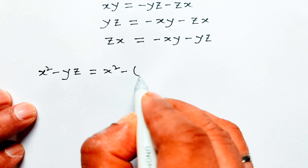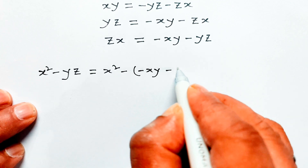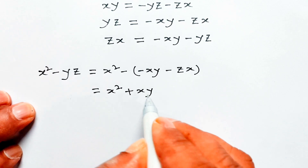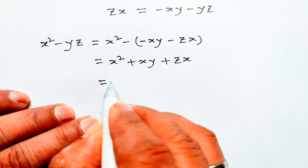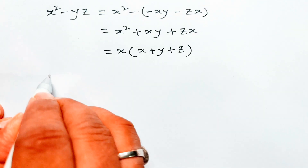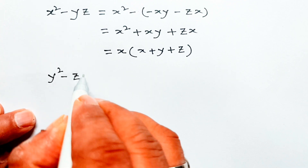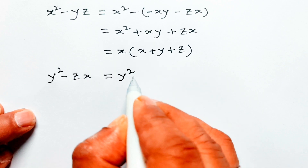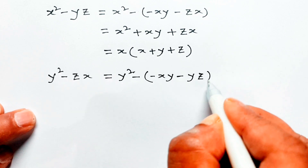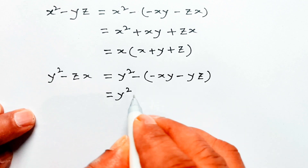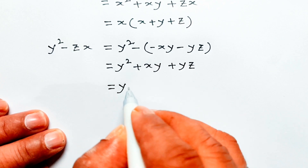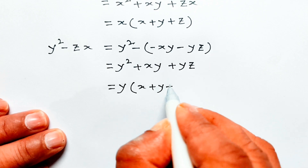Then x squared minus yz equals x squared minus (minus xy minus zx), which equals x squared plus xy plus zx. Taking x as common: x(x plus y plus z). Similarly, y squared minus zx equals y squared minus xy minus yz, which equals y squared plus xy plus yz, giving y(x plus y plus z).